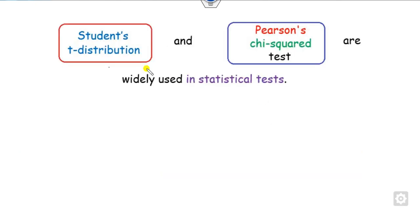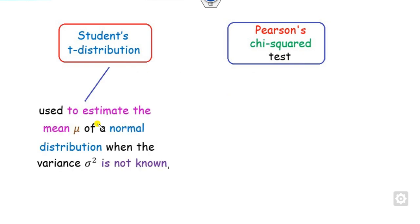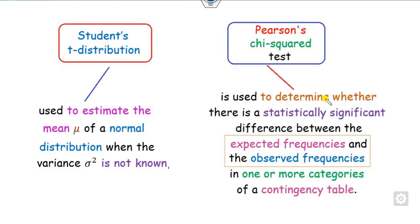As all of us know, the Student T distribution and the chi-square — also called the Pearson chi-square test — are widely used in the statistical testing of hypothesis. The purpose of the T test is to compute or estimate the mean of the normal distribution when the variance of the population is not given. The purpose of the chi-square distribution is to determine whether there is any statistical difference between the expected frequencies and the observed frequencies under a contingency table.